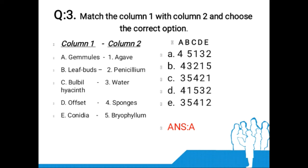The third question: Match the following Column One with Column Two and choose the correct option. Column One: gemmules, leaf buds, bulbil, offset, conidia. Column Two: Penicillium, water hyacinth, sponges, Bryophyllum, Agave.